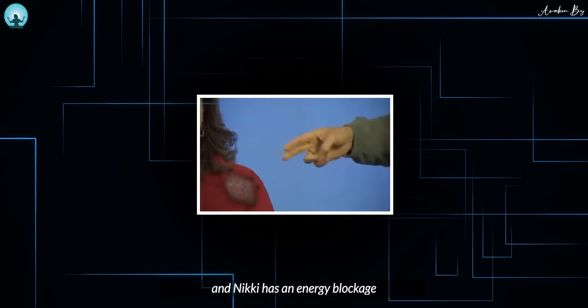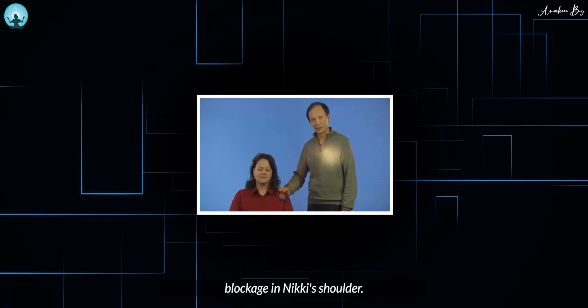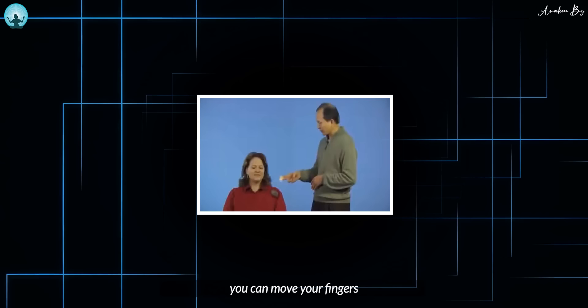So, I'm going to visualize that healing energy is flowing from my heart and through my sword fingers into the energy blockage in Nicky's shoulder. You point your sword fingers to the shoulder. You can move your fingers either in a circular way or a sliding way or a chopping motion.